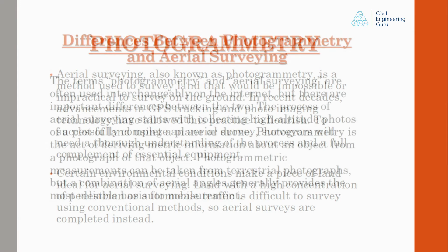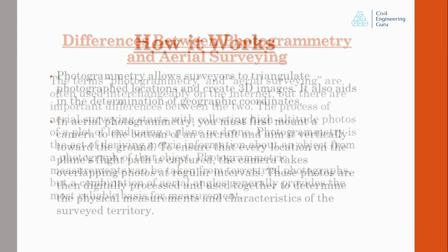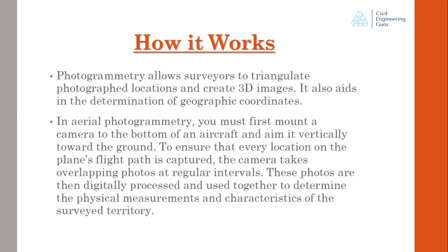The terms photogrammetry and aerial surveying are often used interchangeably on the internet, but there are important differences between the two. The process of aerial surveying starts with collecting high-altitude photos of a plot of land using a plane or drone. Photogrammetry is the act of deriving metric information about an object from a photograph of that object. Photogrammetric measurements can be taken from terrestrial photographs, but a combination of aerial angles generally provides the most reliable basis for measurement.